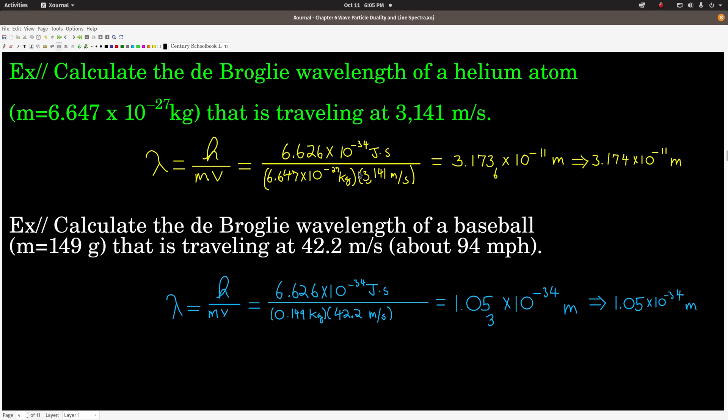So for example, let's calculate the de Broglie wavelength of a helium atom, and this is the mass in kilograms of a helium atom that's traveling at 3,141 meters per second. So if we plug those values in to the de Broglie equation, Planck's constant right here, that mass, velocity there, remember joules is kilograms meters squared per second squared, and so the units do work out. We get a wavelength of about 3.174 times 10 to the minus 11th meters. It ends up that's almost exactly the radius of a helium atom. So it's definitely a detectable wavelength. We have gamma rays probably that can get down into that range, and so this is something that we can actually detect.